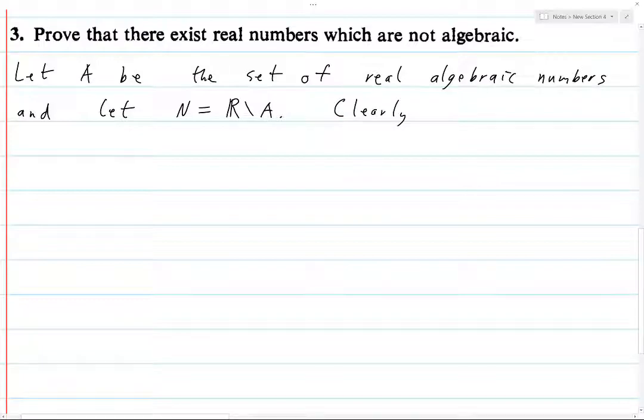So clearly R is the union of A and N. Because N is R and you remove A. And so if you take R, remove A and then you add A back in, then you just get R. So R equals A union N.